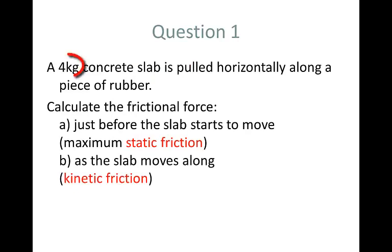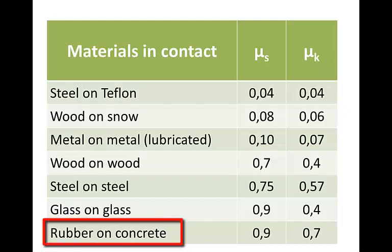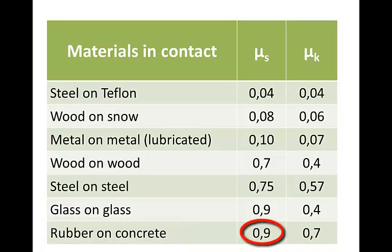Here's our first question. We've got a 4 kg concrete slab and we're pulling it horizontally along a piece of rubber. We need to calculate the frictional force just before the slab starts to move, in other words the maximum static friction, and then as the slab moves along. From our table of coefficients of friction we know that for rubber and concrete the coefficient of static friction is 0.9 and for kinetic friction 0.7.